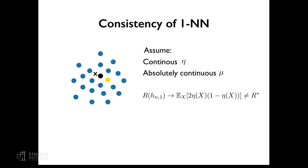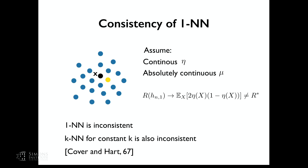There is a result by Cover and Hart from 1967 showing that the risk of the one-nearest neighbor classifier converges to the expectation over x of 2*eta(x)*(1 - eta(x)), not to r*. So one nearest neighbor is inconsistent. Constant k also doesn't converge to the Bayes optimal, though its limit gets better as k grows.